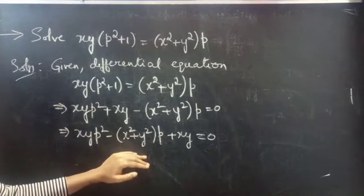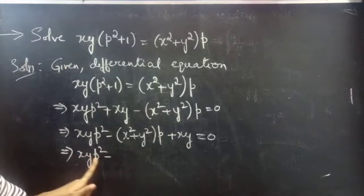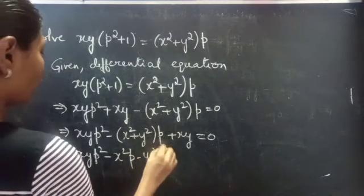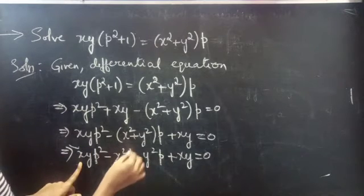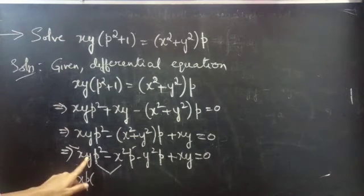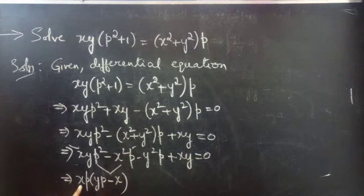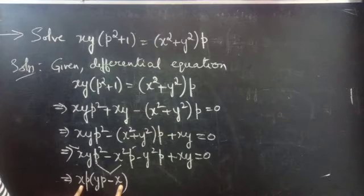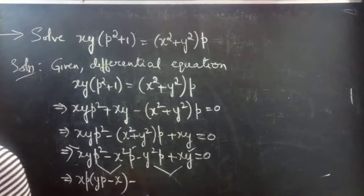This is a quadratic equation in P. We can write this as xy P squared minus x squared into P minus y squared into P plus xy equals to 0. Now we can take xP common from the first two terms, which gives xP times yP minus x.